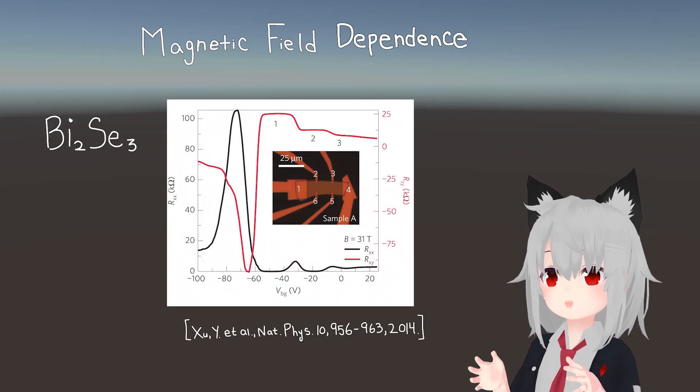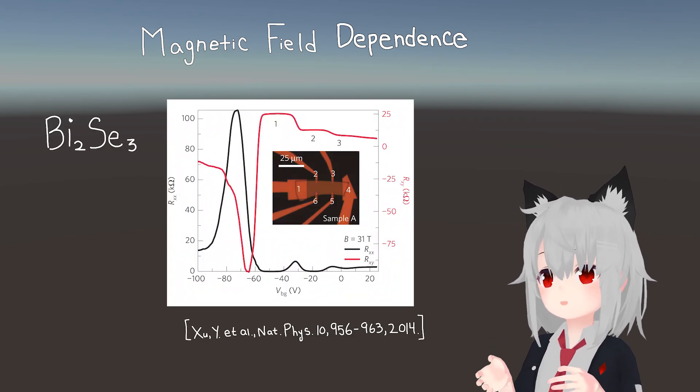And what do you know? This is again exactly what was observed in the topological insulator, bismuth selenide.